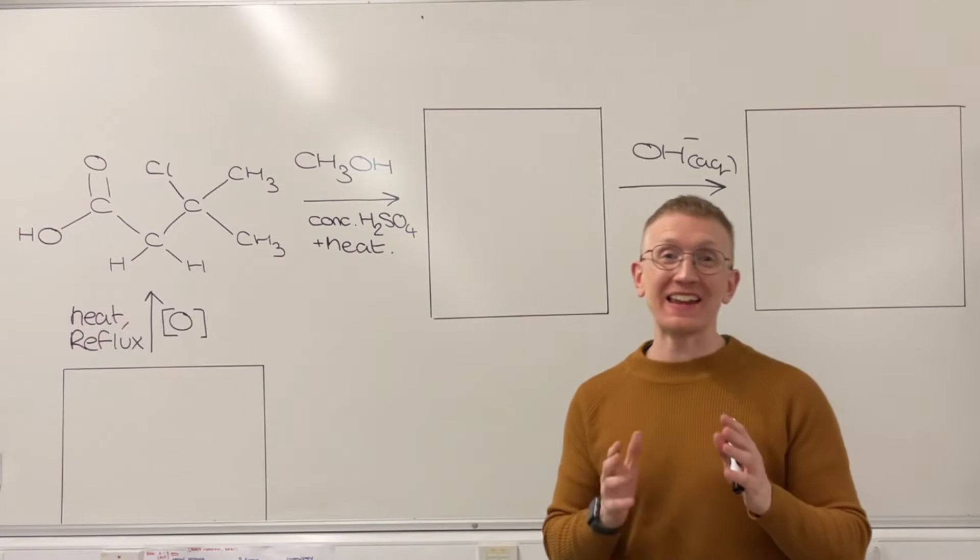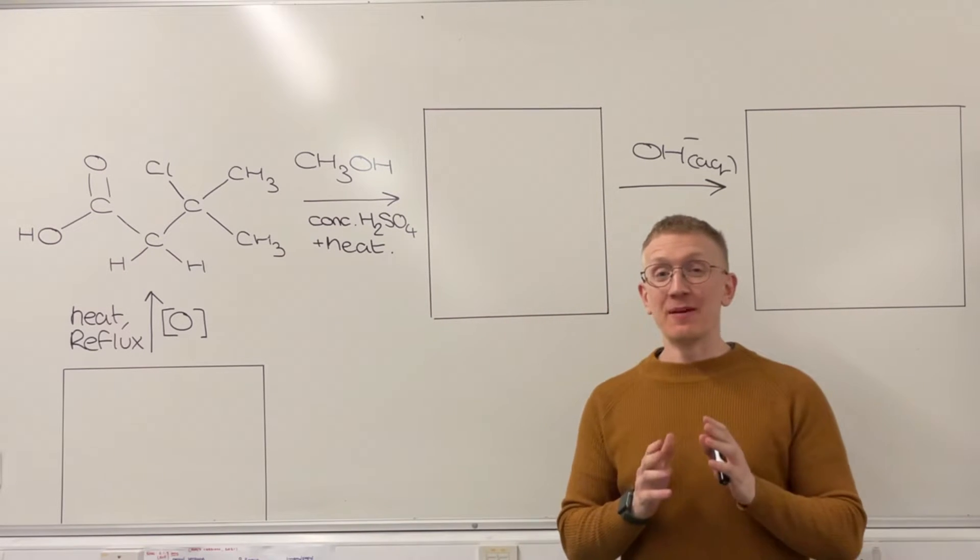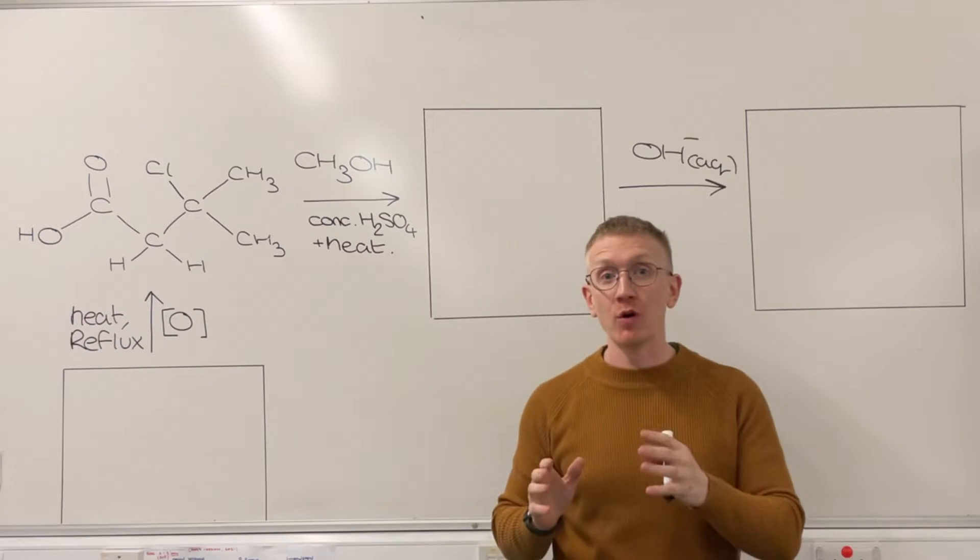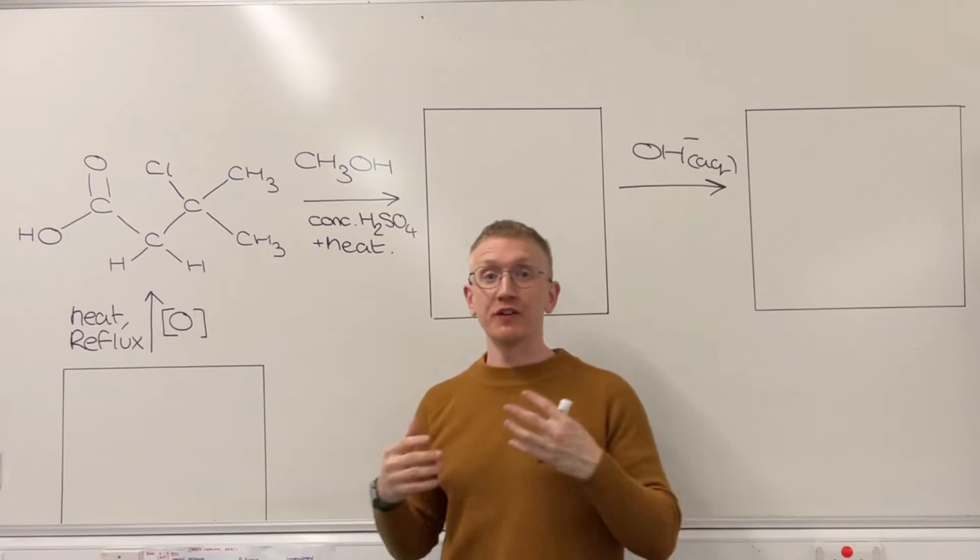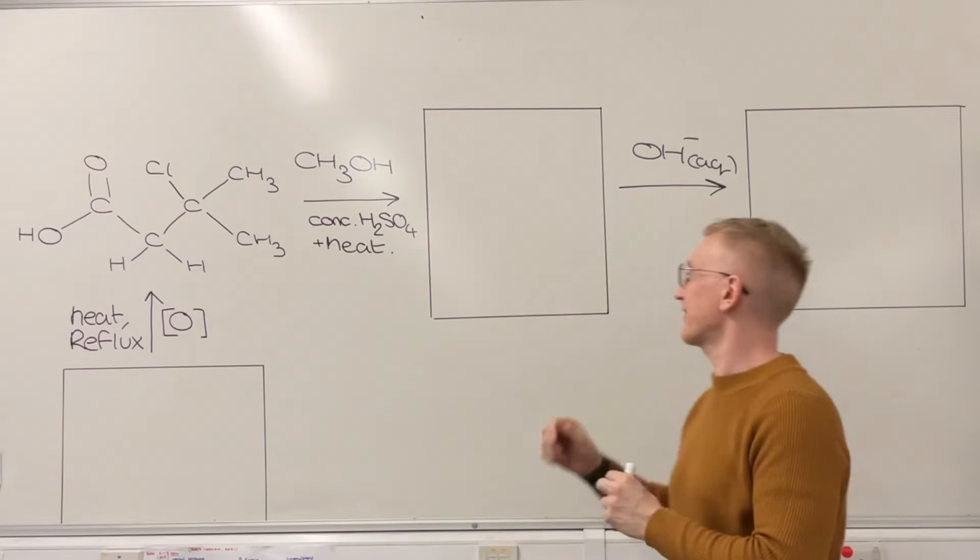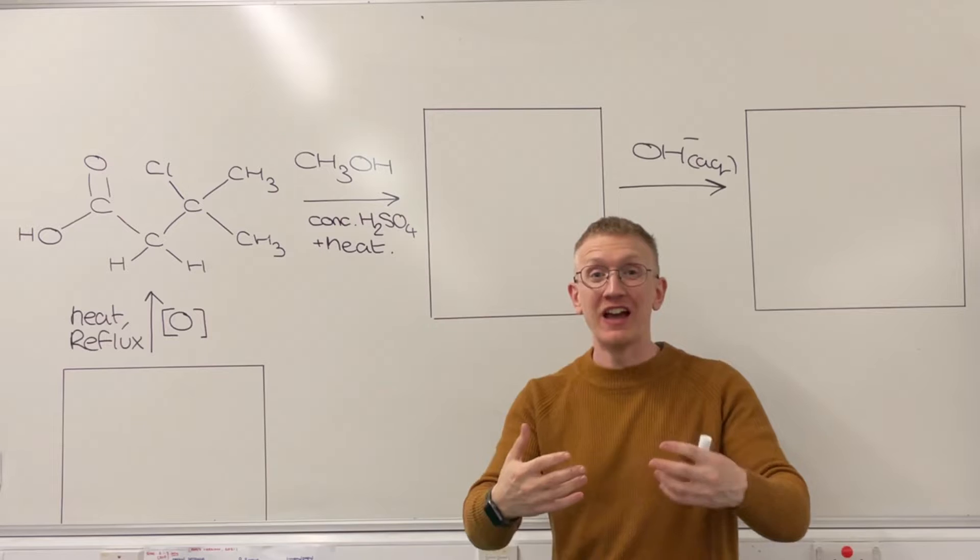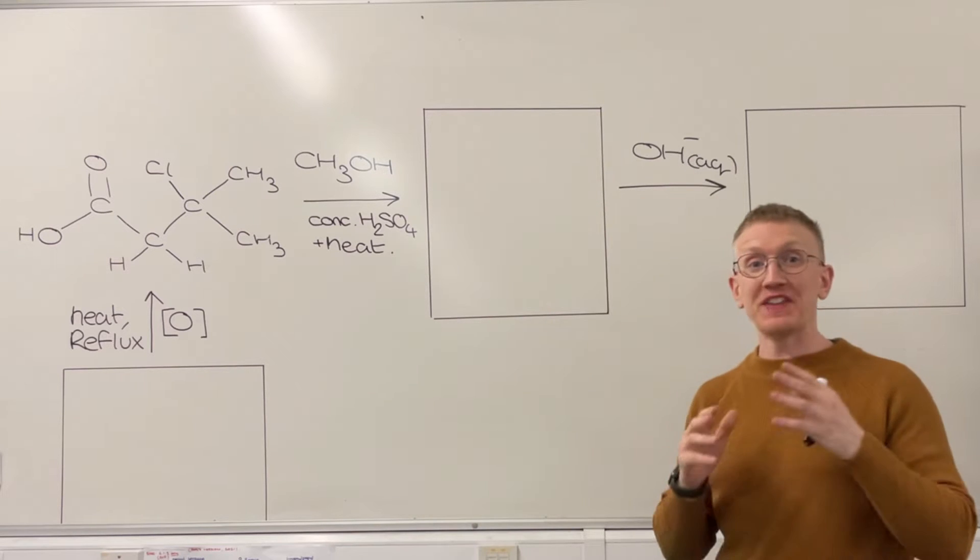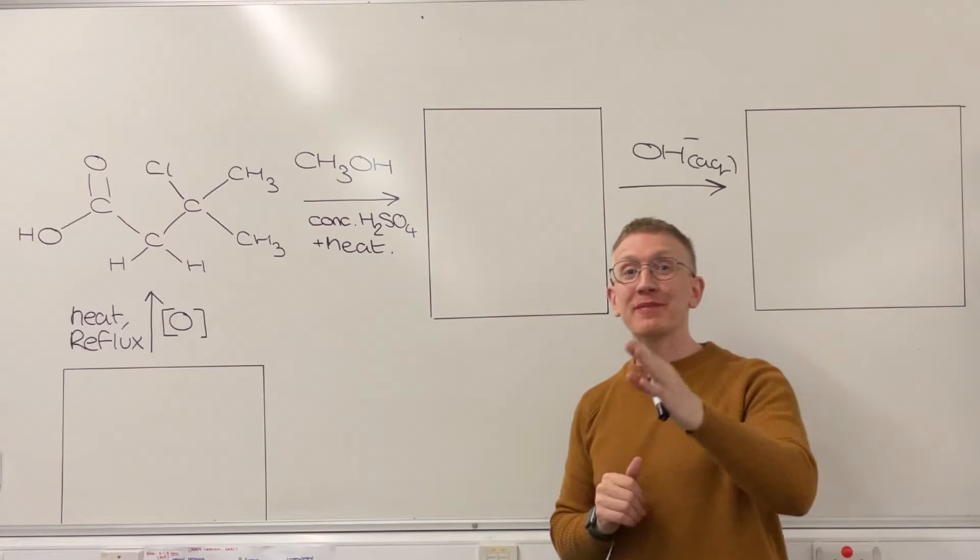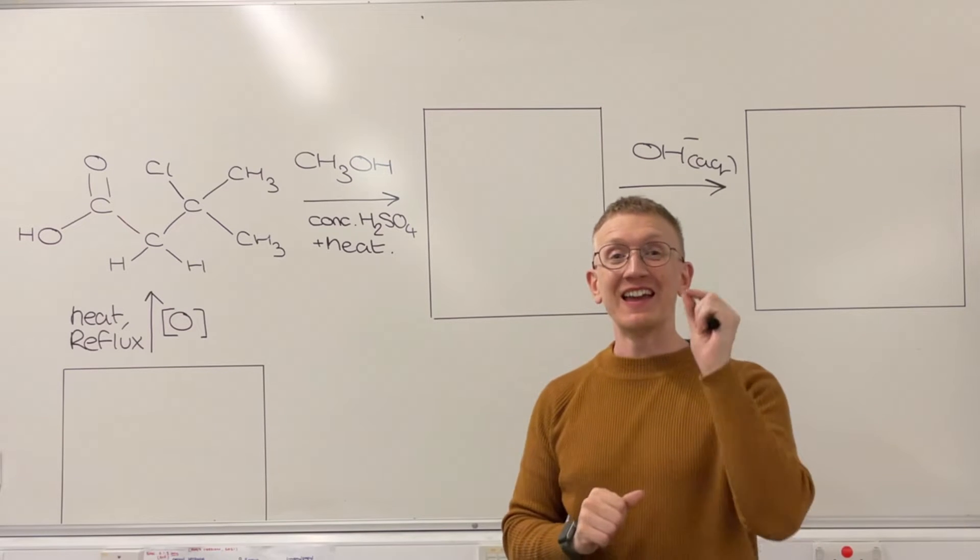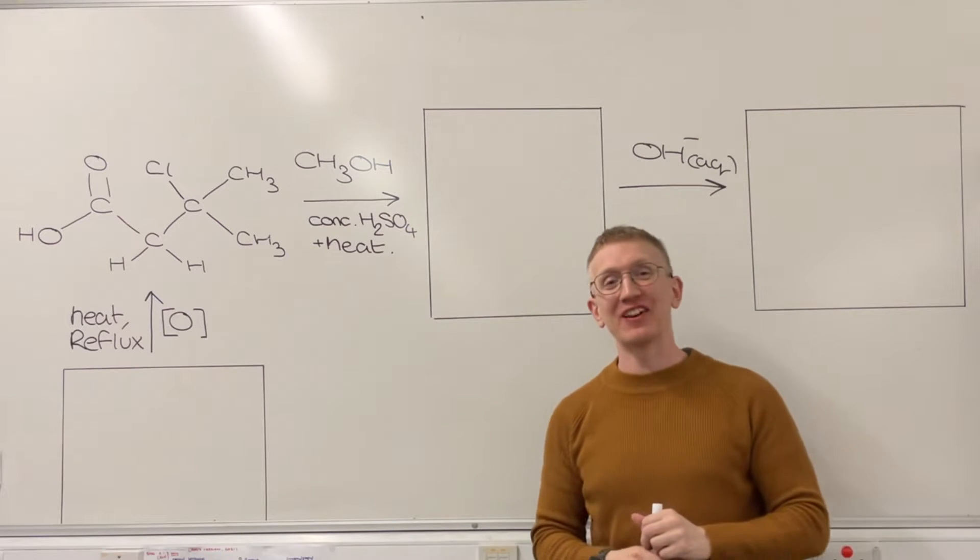Flowchart questions in organic chemistry can seem really tricky because you've got to figure out based on information given by an arrow what the precursor molecule could have been, but you've also got to establish which functional groups are reacting on an existing structure. I'm going to give you some tips in this video about how to approach the flowchart questions in your organic chemistry A-level examinations.